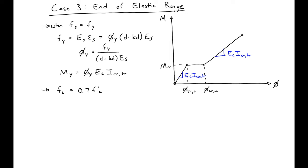we can do the same math as above. We'll have our fc equal to 0.7f'c equal to Ec times epsilon c, which is equal to our curvature at 0.7 times kd times Ec.